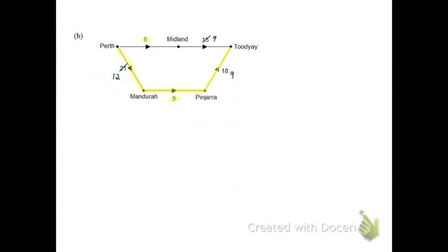Now here of course, I have two routes. So I can indeed have 600 cars per hour travelling directly from Perth to Toowoomba through Midland and a further 900 cars per hour travelling through Mandurah and Pinjarra to Toowoomba. So by adding an extra pathway, I have increased the maximum flow that is possible.